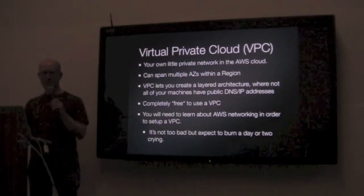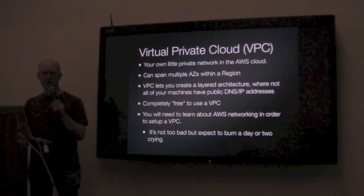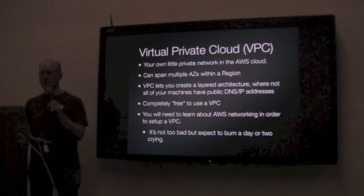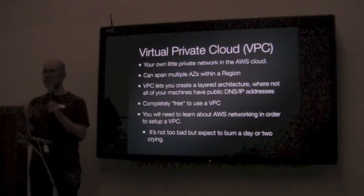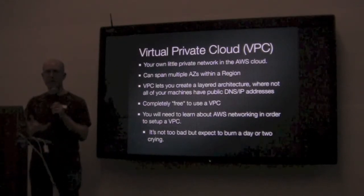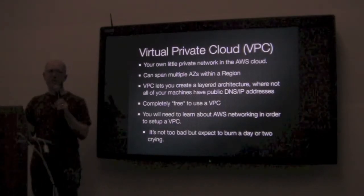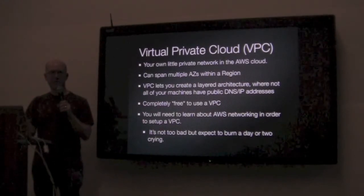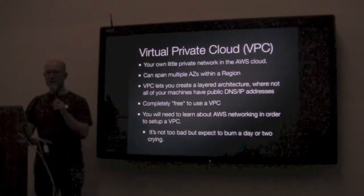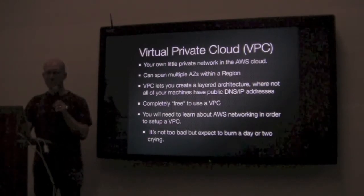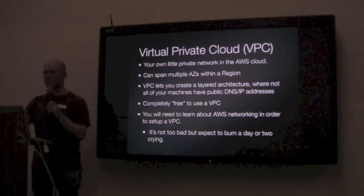The last core service I want to talk about is Virtual Private Cloud — VPC. This is a feature not everyone knows about, but I consider it pretty much essential. What VPC is: it's basically your own private network inside of Amazon's network. Without it, your boxes are floating around in the cloud, potentially right next to someone else's, with no real network security — you're totally out in the open with public DNS and public IPs on everything.